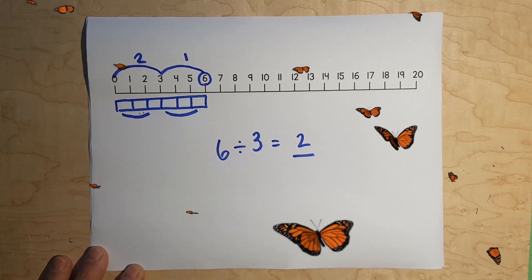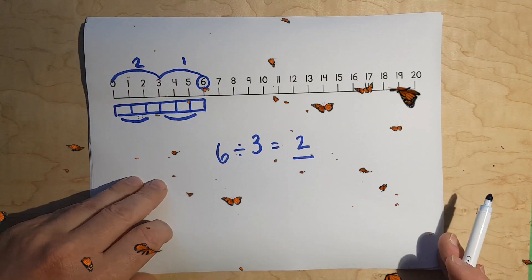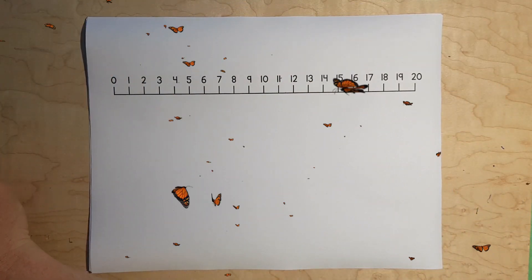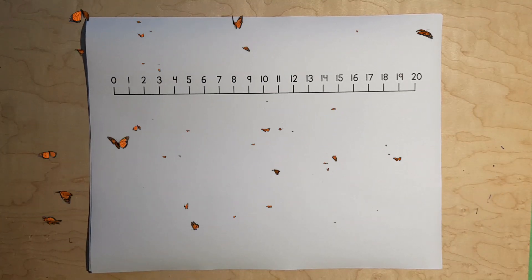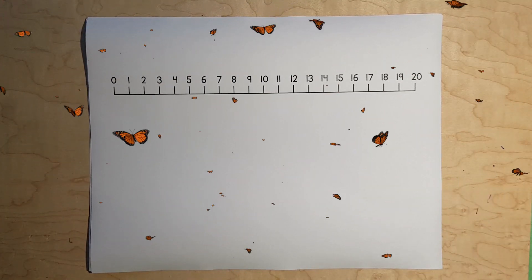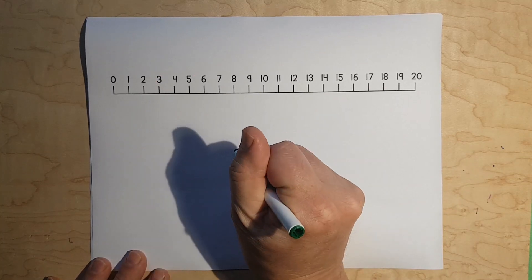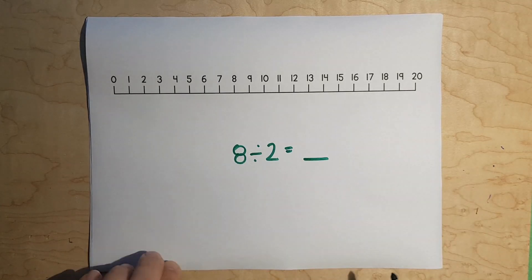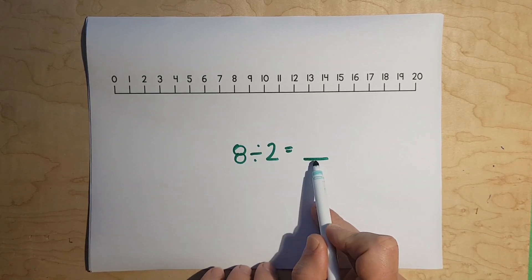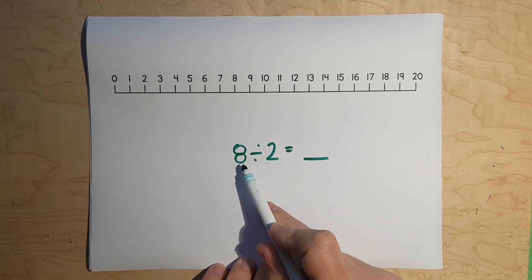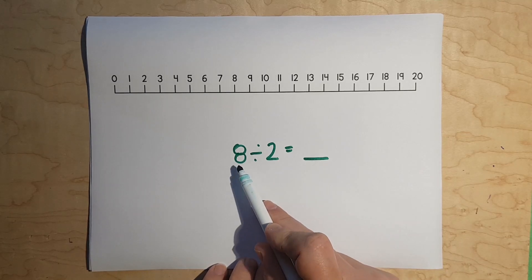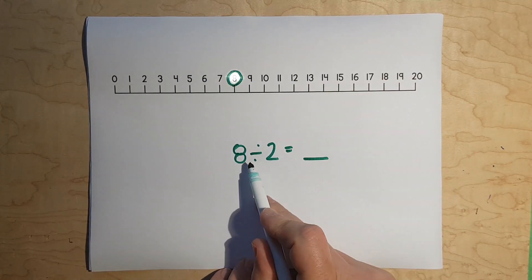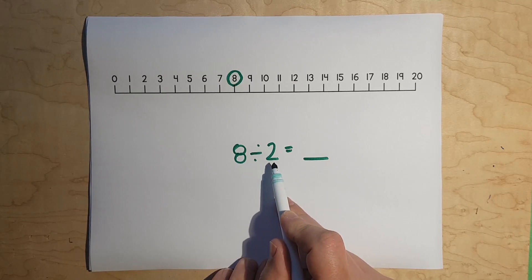Does that make sense? Okay, let's do another example using a different color to make it look more interesting. Now, let's do 8 divided by 2. Again, we have our dividend, our divisor, and our quotient, or the answer.